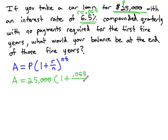n is the number of compounds in a year, and this one's compounded quarterly. So how many quarters do we have in a year? There are four quarters in a year, just like there are four quarters in a dollar. All to the nt power—n is 4. t is time. It's a 5-year loan we're interested in, so we're gonna multiply by 5.